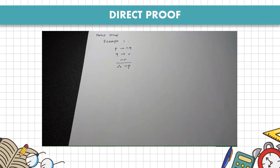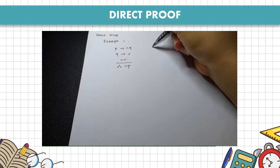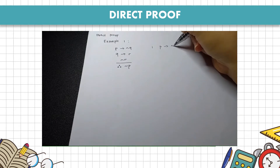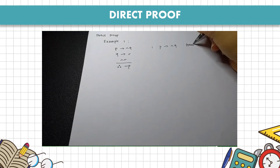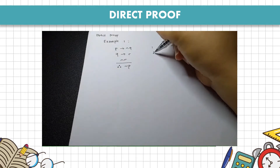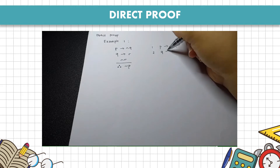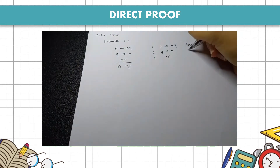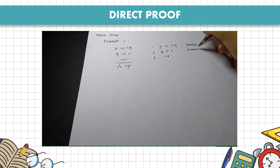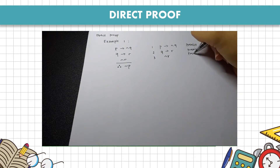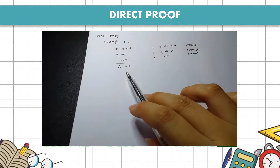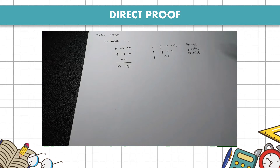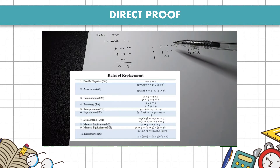The first thing we do is rewrite the premises. The first premise is P implies not Q. The second premise is Q implies R. The third is not R. Using only these three premises, we will derive the conclusion not P. We look at the premises and check if any match the rules of inference or rules of replacement.